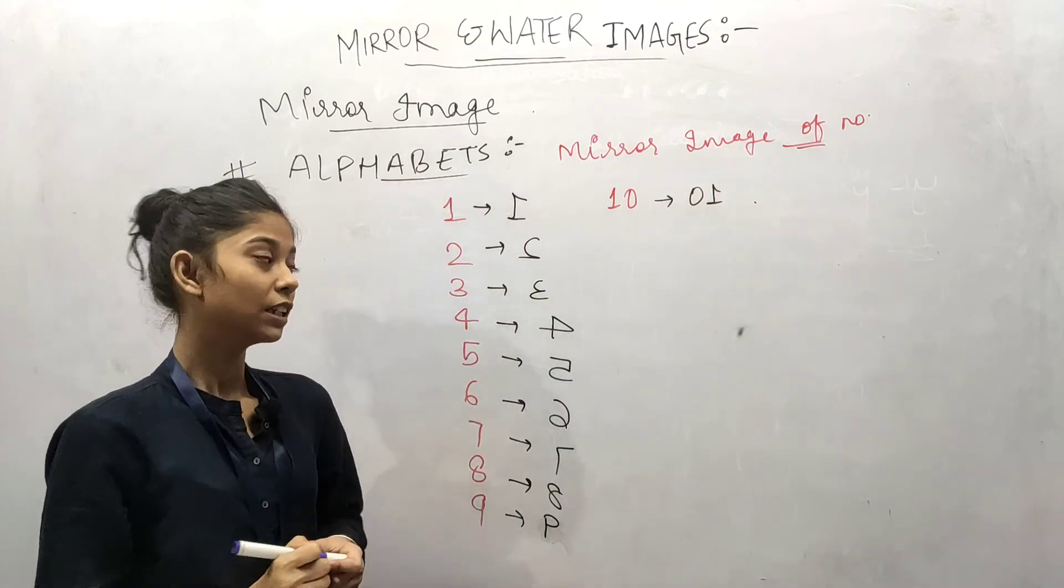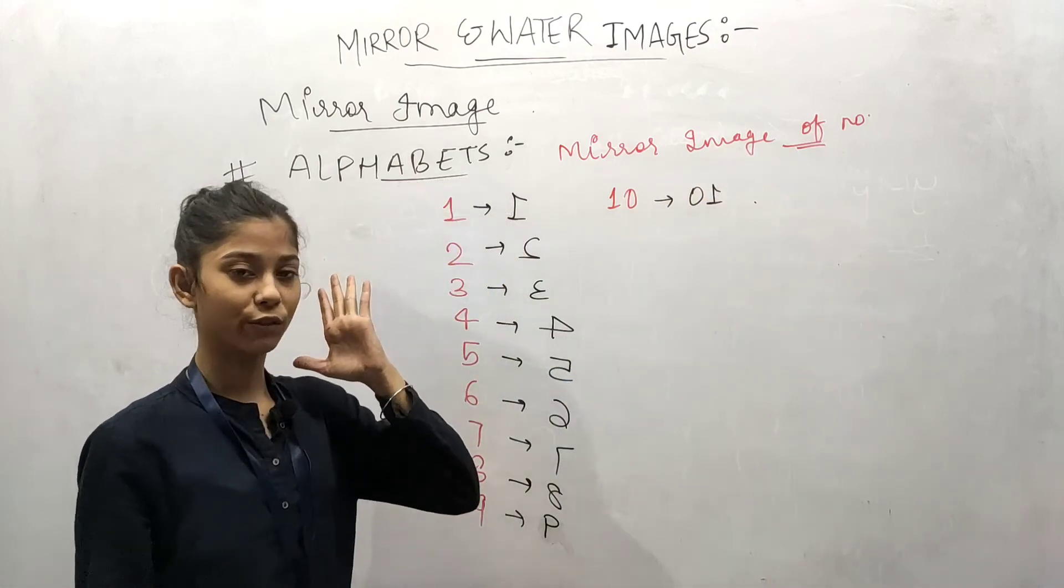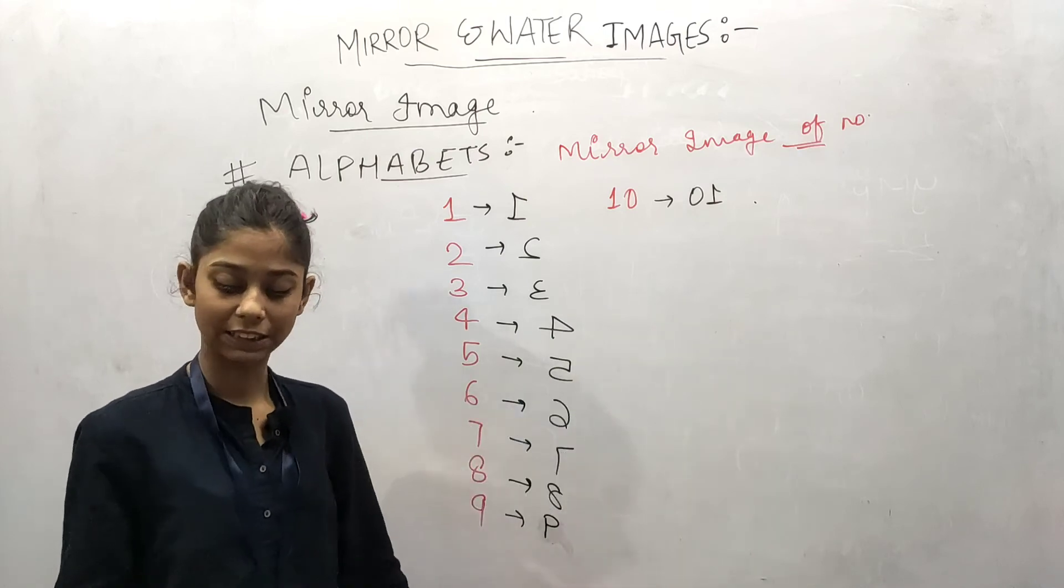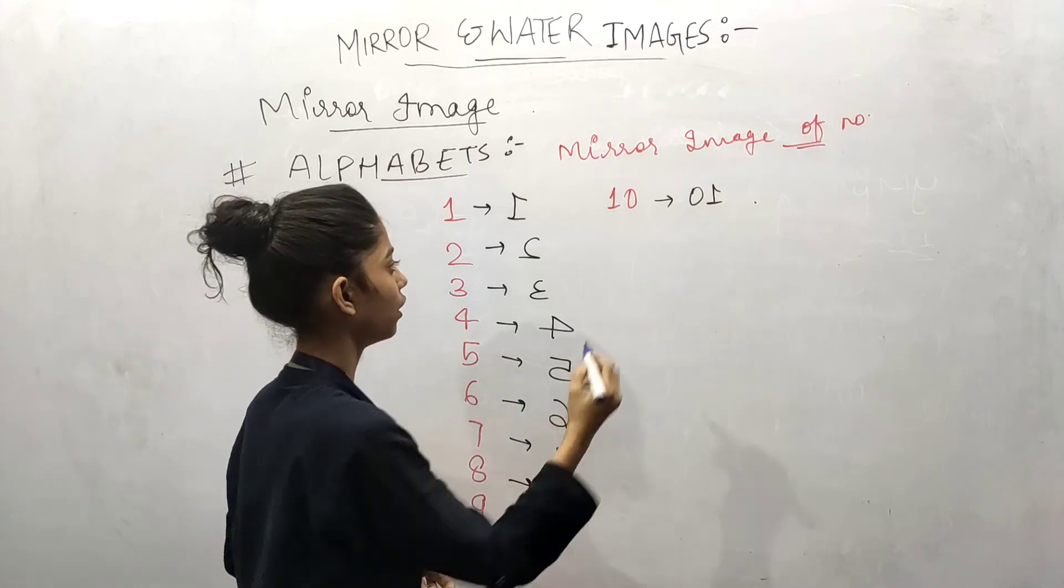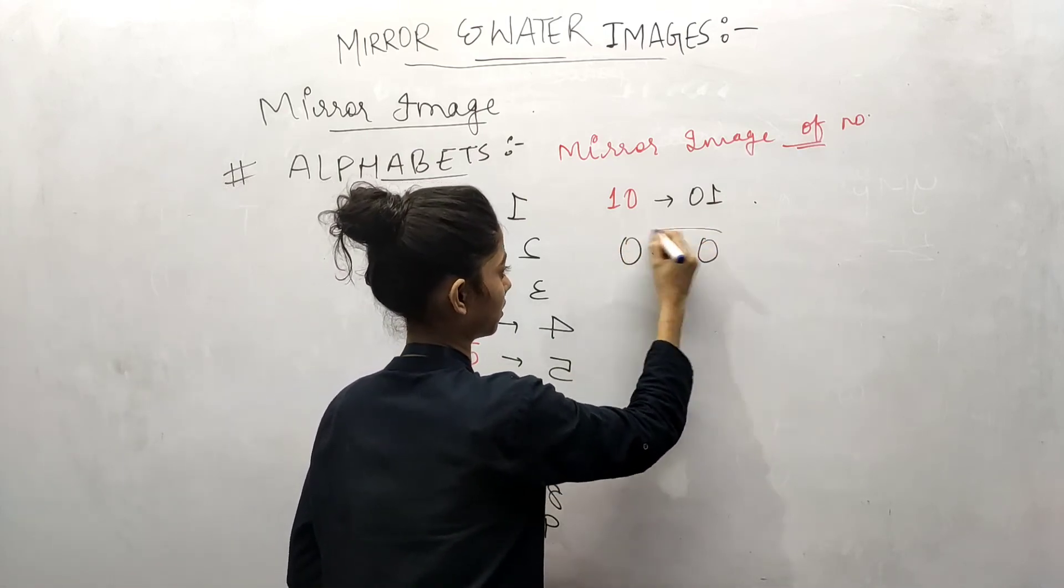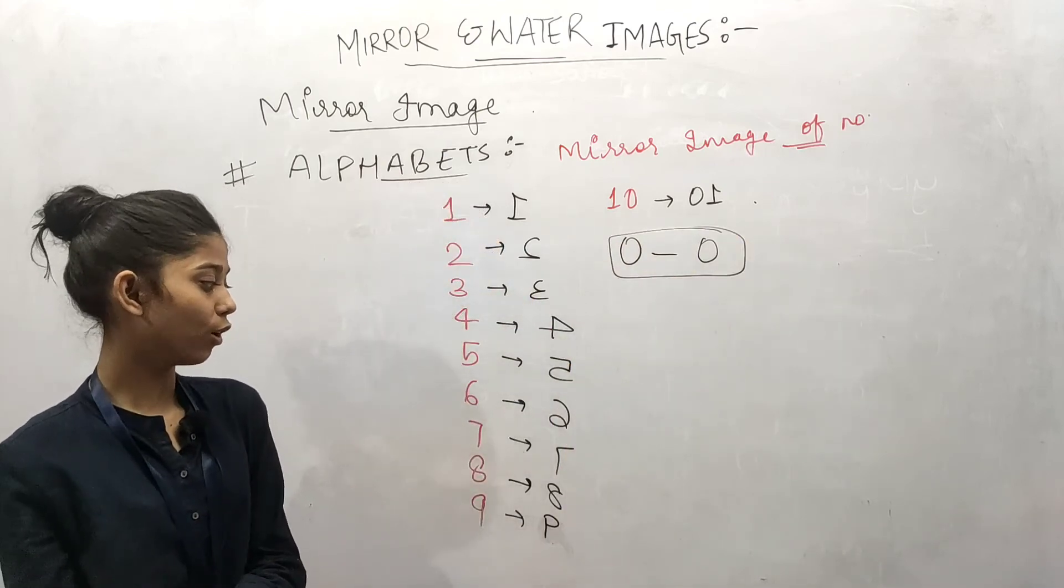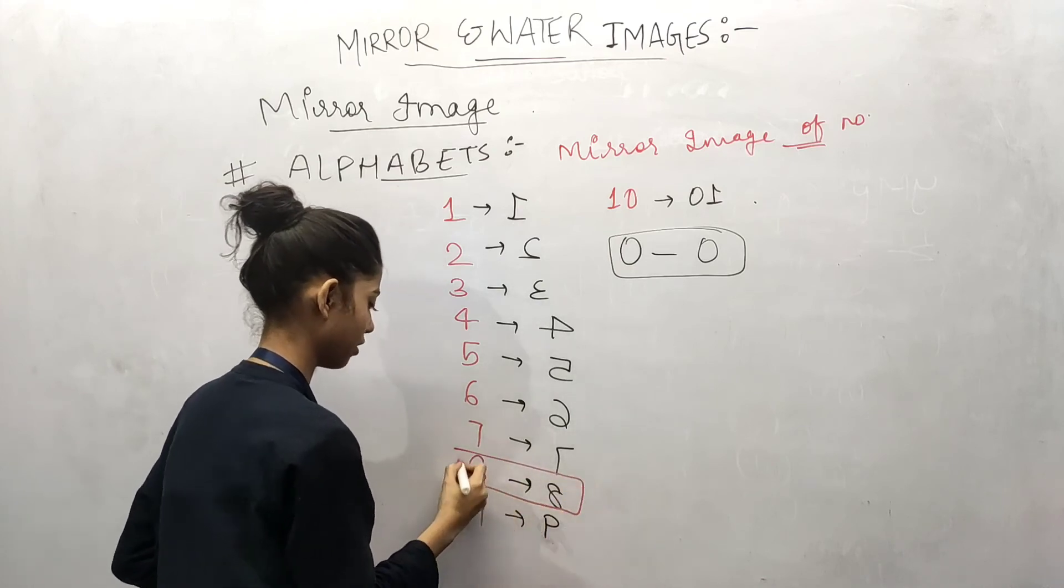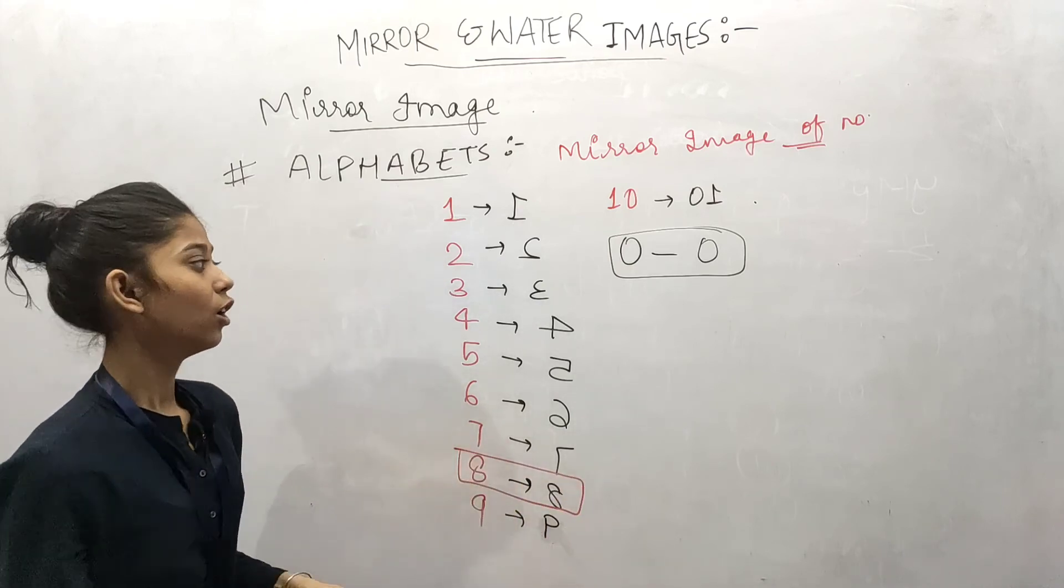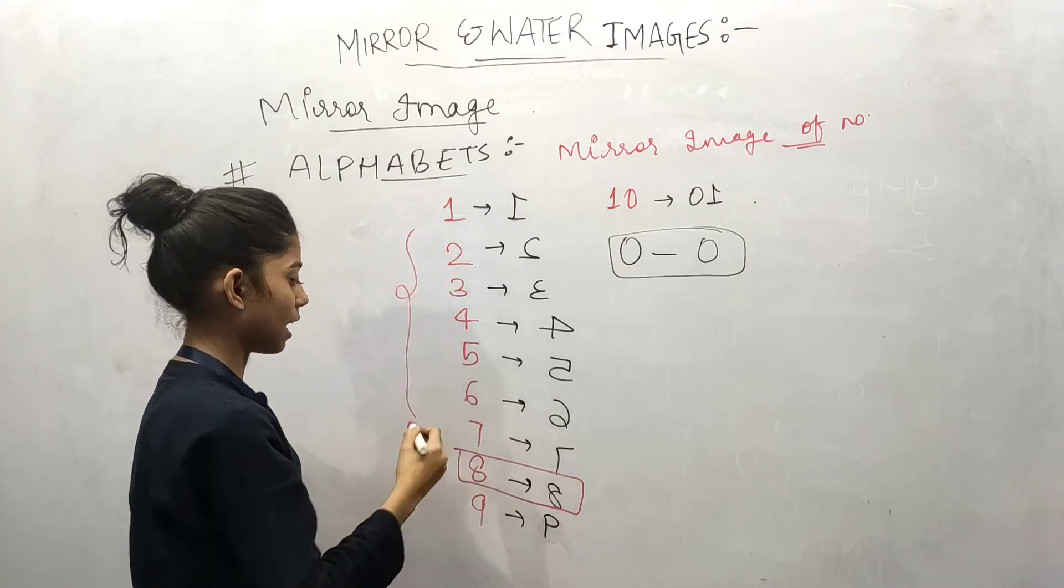So here it is, when we change the numbers, then it will be like this. Zero will remain unchanged, all right. And here eight will not be changed. Eight will remain unchanged. So this will be the mirror image of numbers.